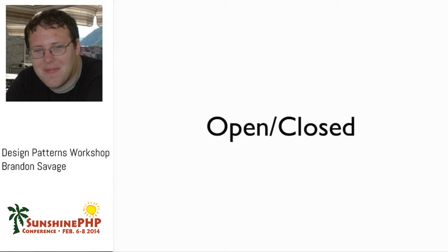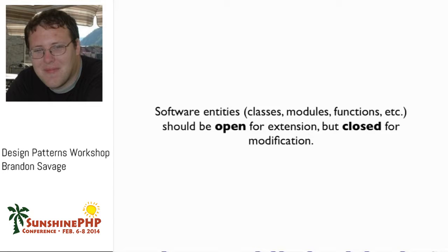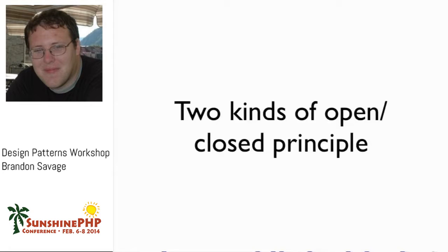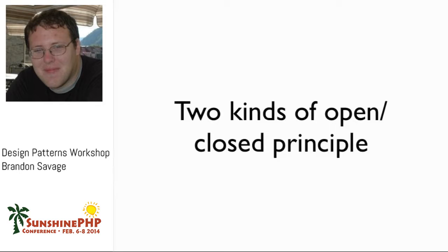Let's talk about the second principle: the Open/Closed Principle. The Open/Closed Principle states that software entities - classes, whatever - should be open for extension and closed for modification. There are two kinds of Open/Closed Principle applications. We'll talk about the first one, which is not as popular anymore, and then the second one, which is what we'll focus on in this workshop.